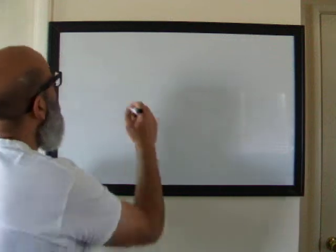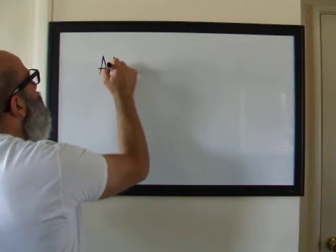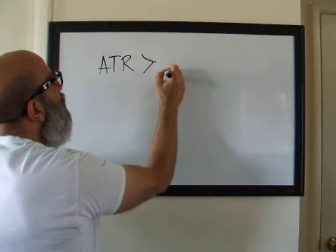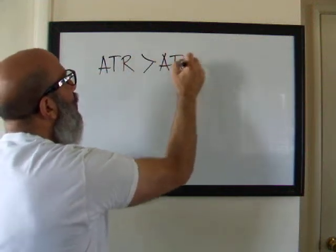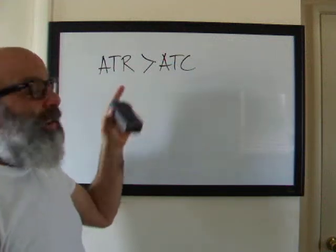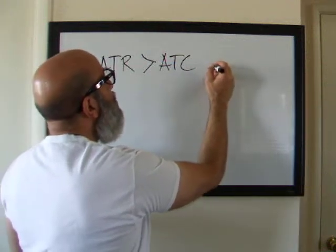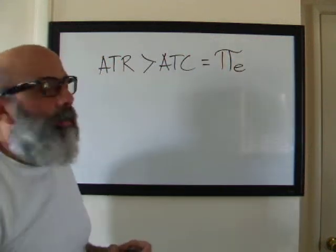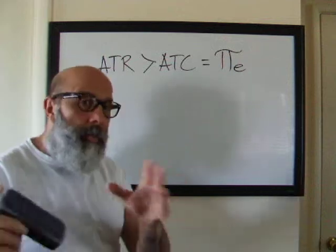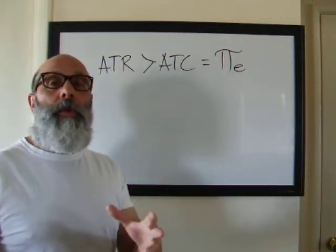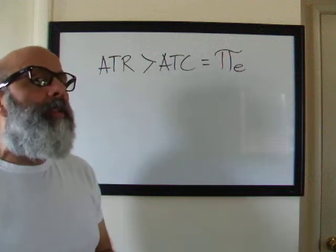Anytime the average total revenue is going to be greater than the average total cost at a certain production quantity, we're going to say that that's an economic profit. Profit that's economic. Remember, economic profit is excessively high. It's greater than the market rate of return. It's got to be a plus number.